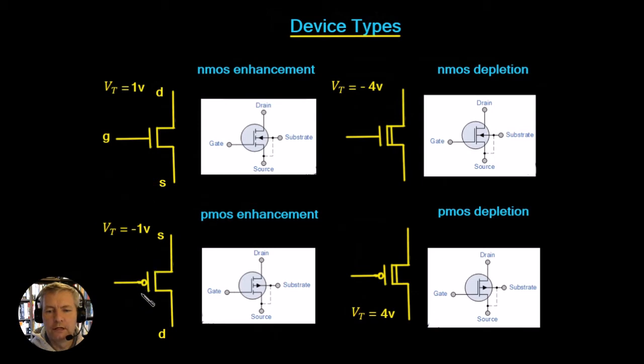Now the depletion devices for NMOS and PMOS are very similar. We've just got this little line here, and you can see that this little line represents the fact that whenever the gate voltage is sitting at zero volts, we've actually got a channel appearing across this.